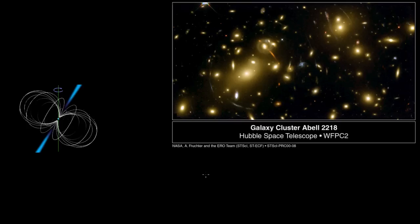It turns out that the curvature of space-time will not only affect the relative motion of massive particles, but can also affect the propagation of light. Here we have a Hubble image showing a phenomenon known as gravitational lensing — these galaxies in the foreground are curving the space-time around them so that the light from the galaxies behind is being bent and distorted. Those wispy lines are actually distorted images of galaxies behind this cluster.